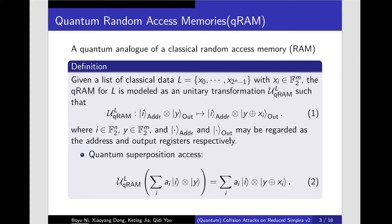The QRAM for L is modeled as a unitary transformation as follows. Therefore, we can access any quantum superposition of the data cells by using the corresponding superposition of addresses.